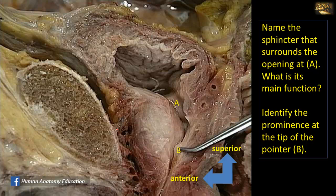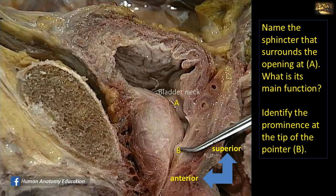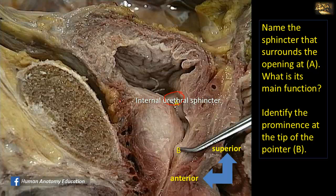Name the sphincter that surrounds the opening at A and what is its main function. This is a close-up view of the male pelvis. You can see the pubic symphysis, the urinary bladder with its apex and base. This is the region of the neck — the opening is the internal urethral meatus. It is surrounded by thickening of smooth muscle fibers, the detrusor muscle of the urinary bladder, called either the internal urethral sphincter or sphincter vesicae, which more accurately reflects its function: it acts as a sphincter for semen rather than for urine.